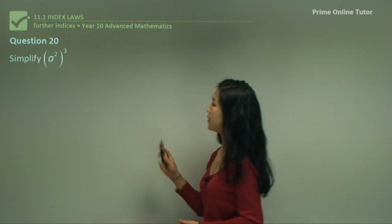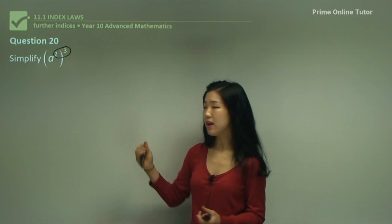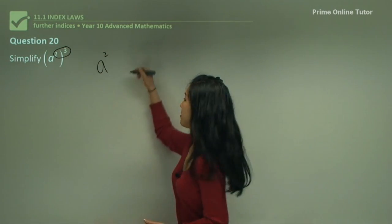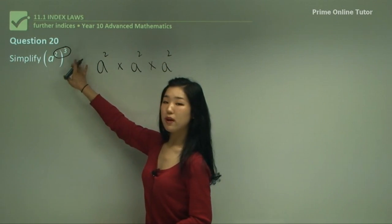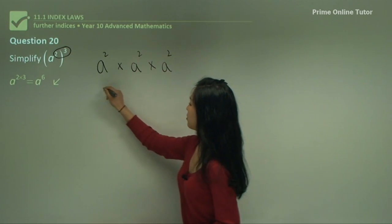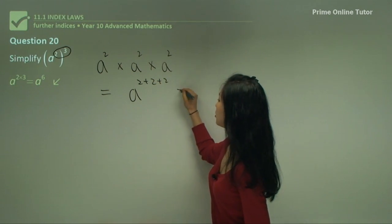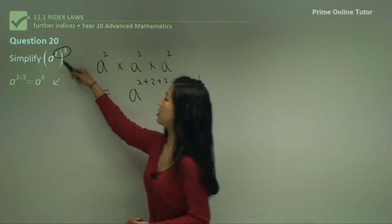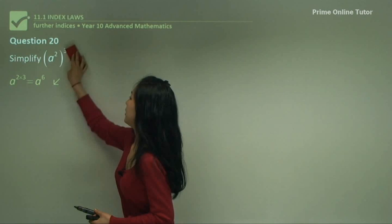When you get something like a squared, the whole thing to the power of 3, all we do is multiply the two indices together. Because a squared cubed simply means a squared times a squared times a squared. So multiplying the indices gives a to the power of 6. And we verify: using addition, a to the power of 2 plus 2 plus 2 is also a to the power of 6. So just multiply the two indices together — that's another rule to remember.